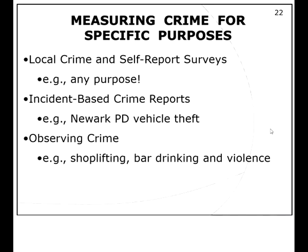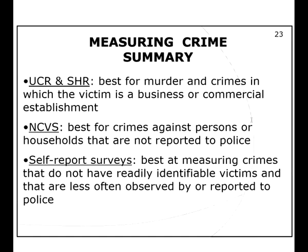For specific purposes, local crime and self-report surveys can be used for pretty much anything. Incident-based crime reports — like looking at Newark PD vehicle theft data — can be obtained from local police departments, which can give you more information than the UCR. You can also observe crime directly: going to places with a lot of crime and observing shoplifting, bar drinking and violence, or watching whether people who drink get in their cars.